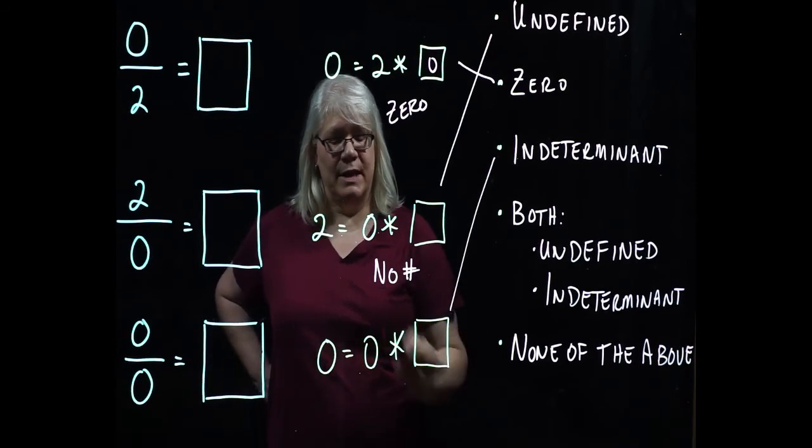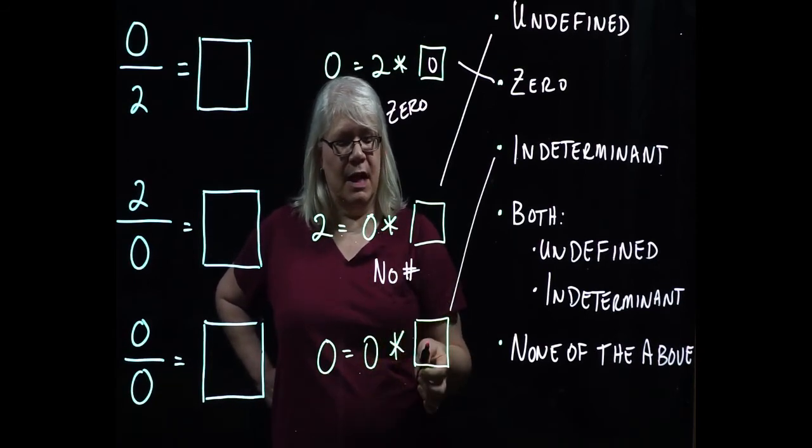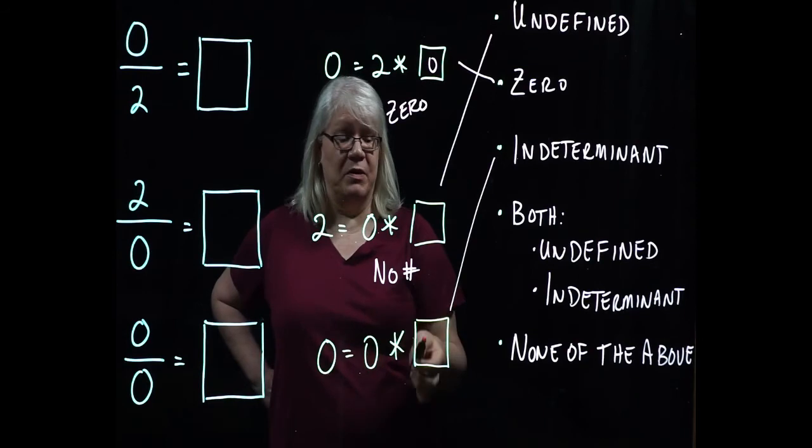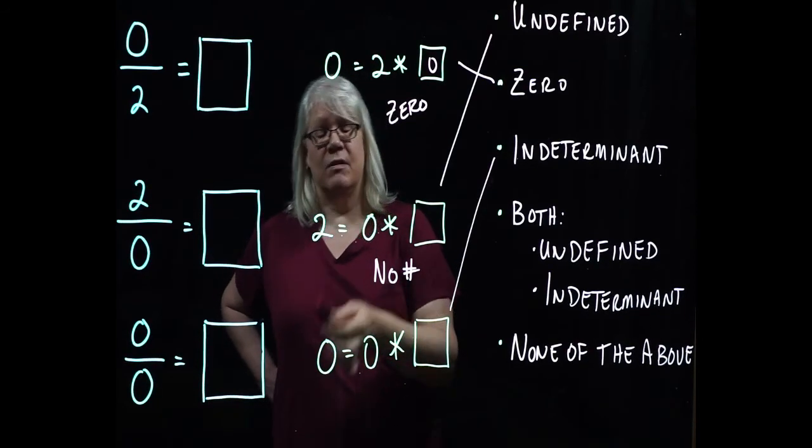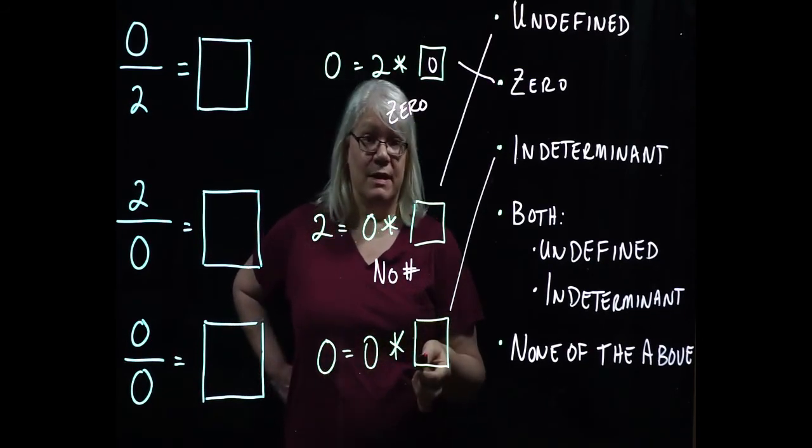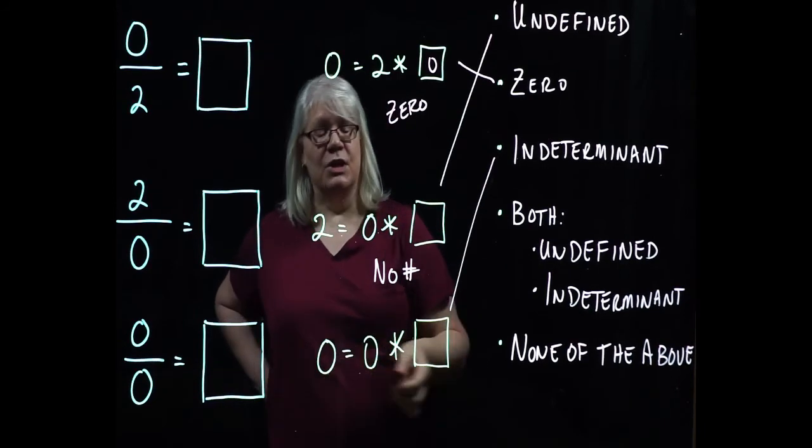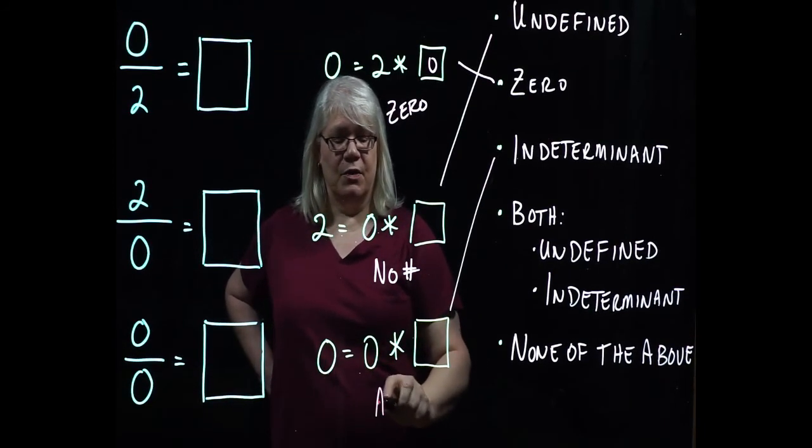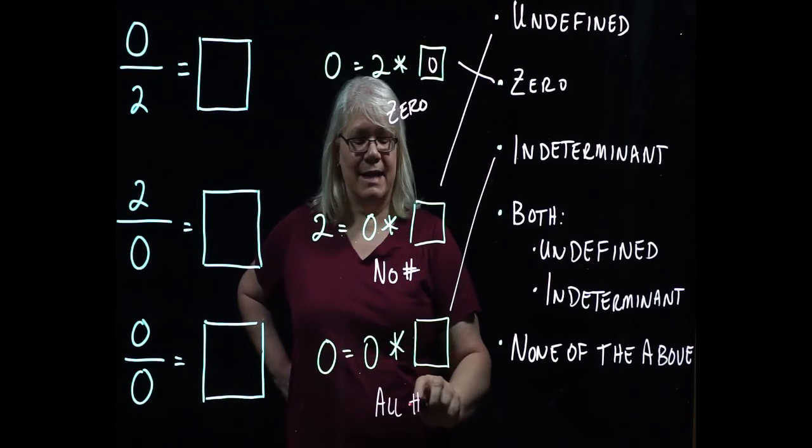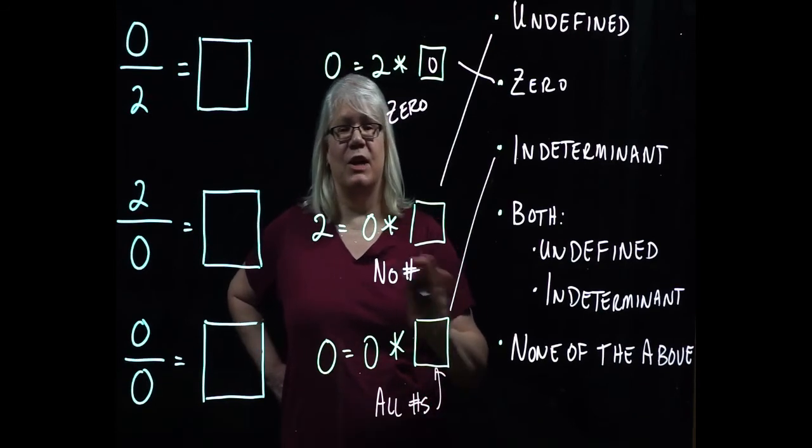Now in this last one here, zero times a number gives me zero. Well, if I put two in, it works. If I put seven in, it works. If I put minus 27 in, it works. So it looks like all numbers will work with this last one. I can put any number in there I choose and it works.